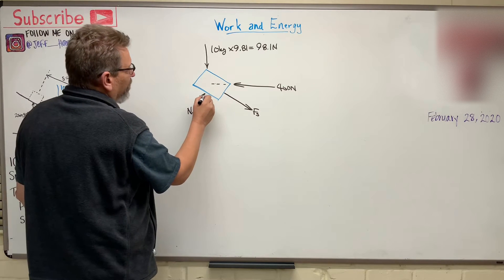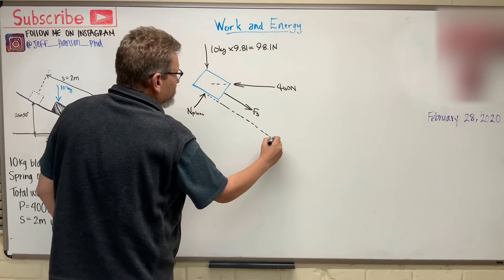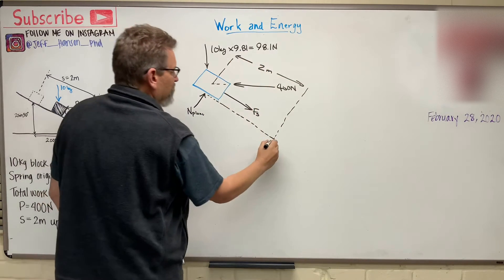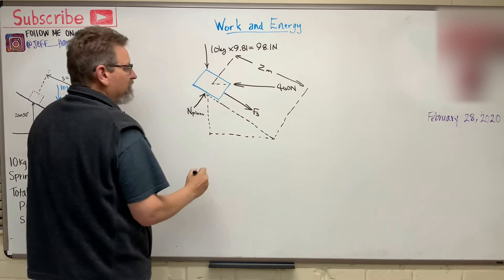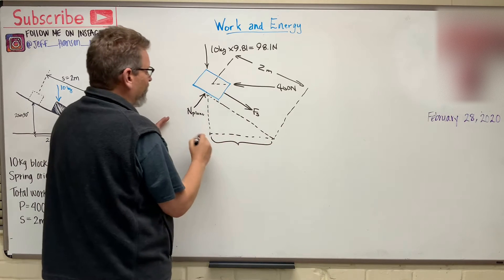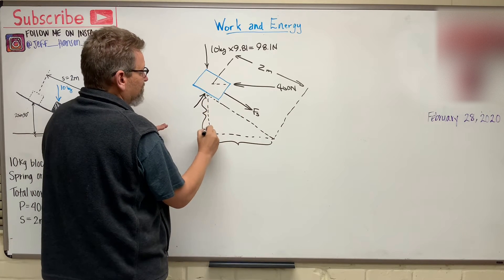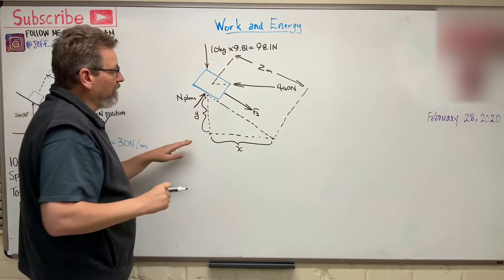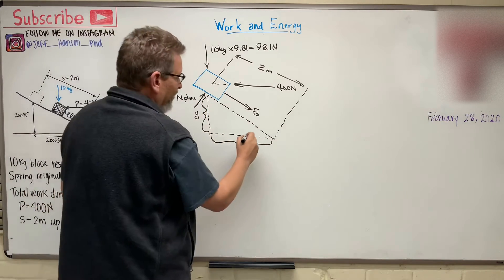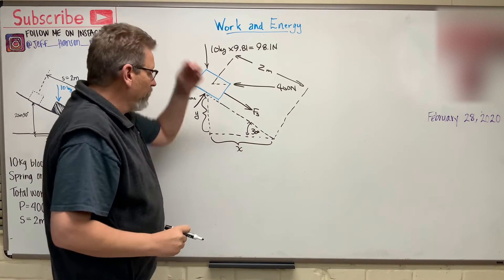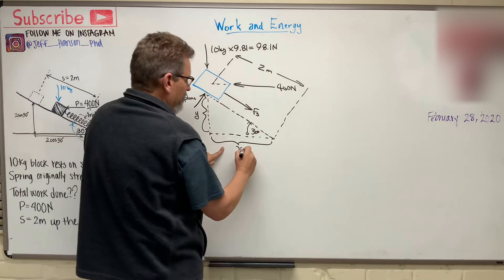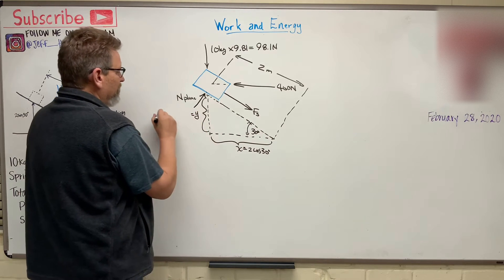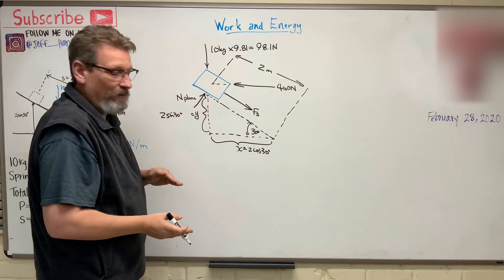Let's sketch this out. Here's the inclined plane — this is where the block started, and here's where it is now. This distance along the ramp is two meters. As the block moves up the hill, it's moving some distance in the x-direction and some distance in the y-direction. The problem tells us the plane is on a 30-degree incline, so the x-component is 2cos30 and the y-component is 2sin30.